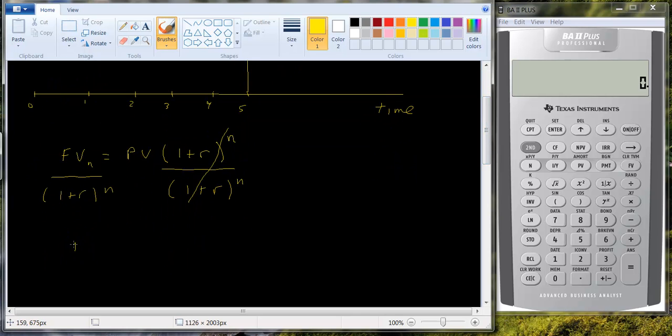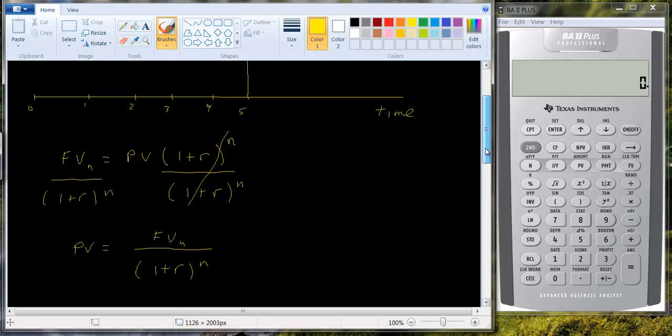So basically there's a relationship between present and future value. The present value is going to be equal to the future value in year n divided by one plus the interest rate raised to the nth power. Just a simple formula we plug into.